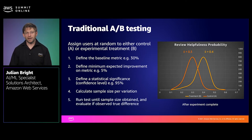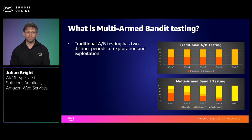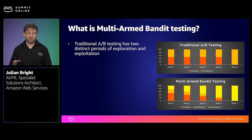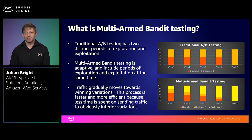Once the test is complete, you can evaluate if you observed a true difference in your metric, as we can see with the graph on the right-hand side. So traditional A-B tests have two distinct periods of exploration and exploitation — the first being when you explore whether a new model variant is going to challenge the current champion. While you're establishing the winner, you're sending traffic to the less effective variant until the winner is declared, which in this case is week 5. Multi-armed bandit testing is adaptive and includes periods of exploration and exploitation over the duration of the test, sending more traffic to the challenger variant that is delivering the highest reward as defined by your conversion metric. This process can be faster and more efficient because you're spending less time sending traffic to the inferior variations, resulting in a better user experience.